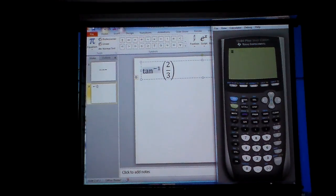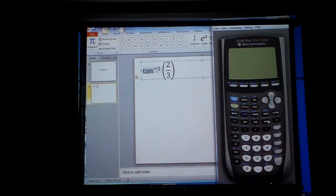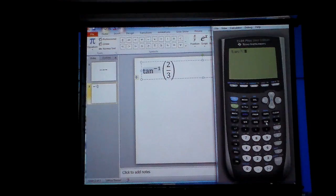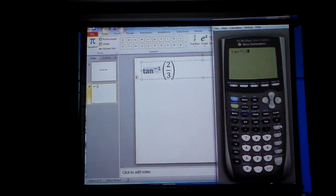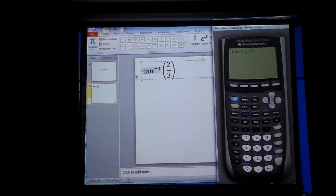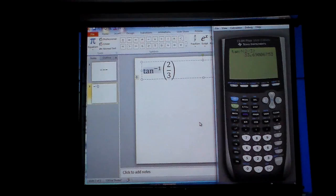Now I'm right there. I'm going to hit second mode, and then I'm going to come back over here to this problem. I'm not going to hit the tangent button, so I want the angle. When I want the angle, I hit second tangent, and I'm just going to type in 2 divided by 3, close the parentheses, and then hit enter, and I find that that angle is 33.7 if you round it.